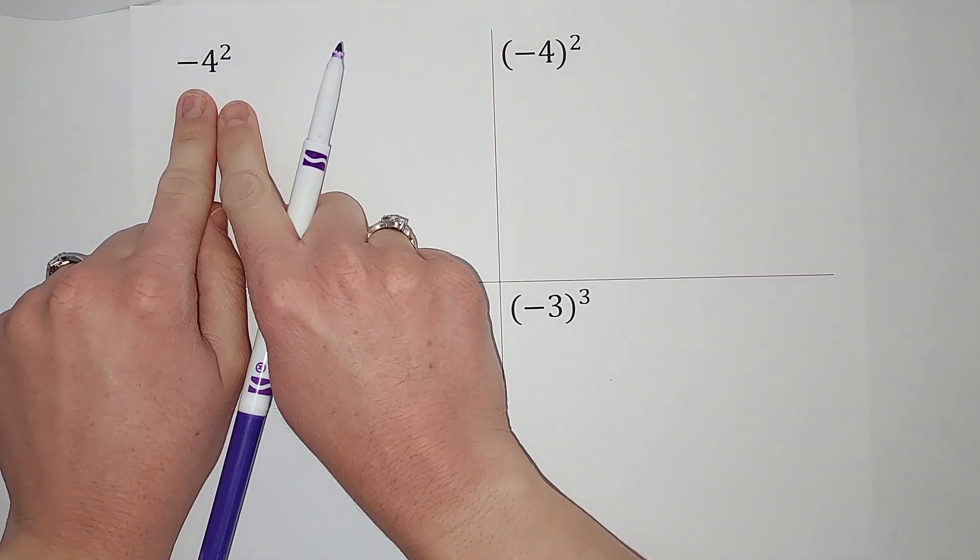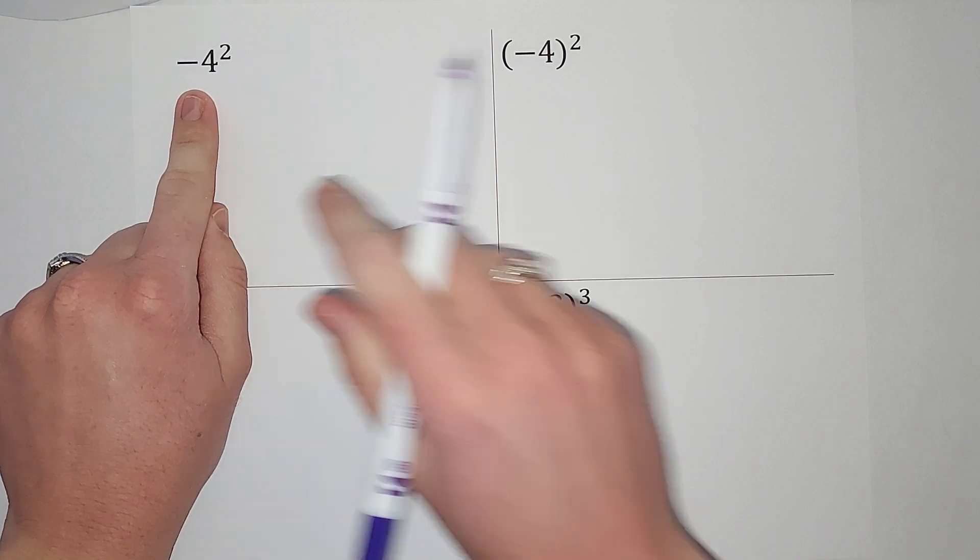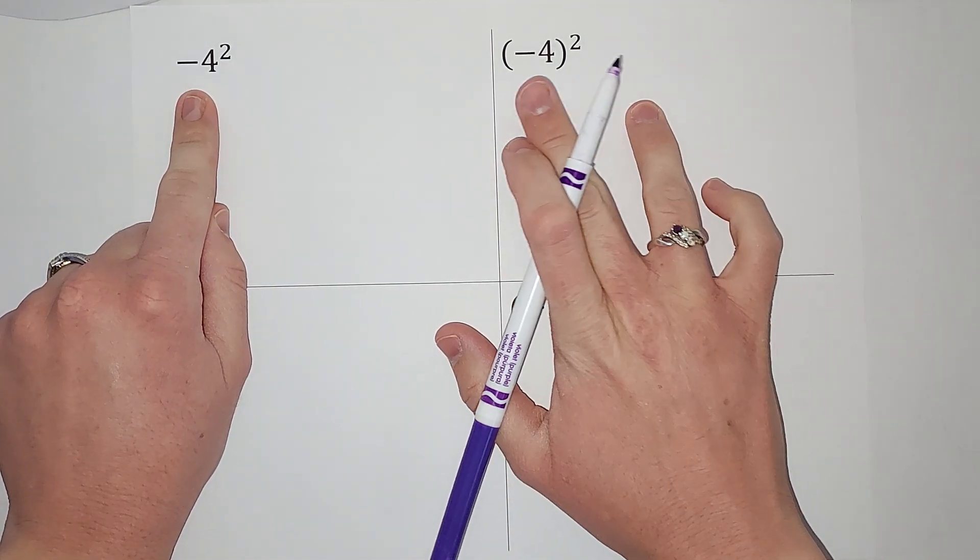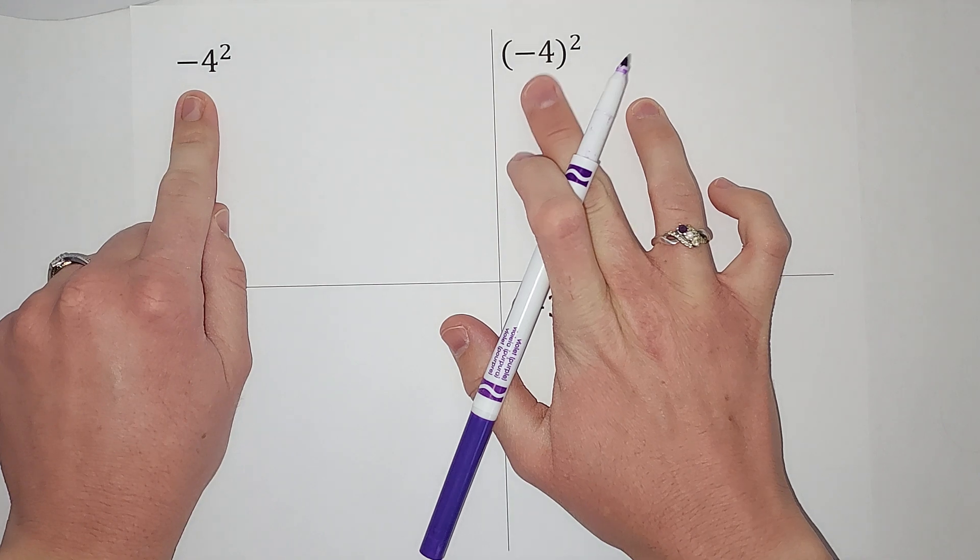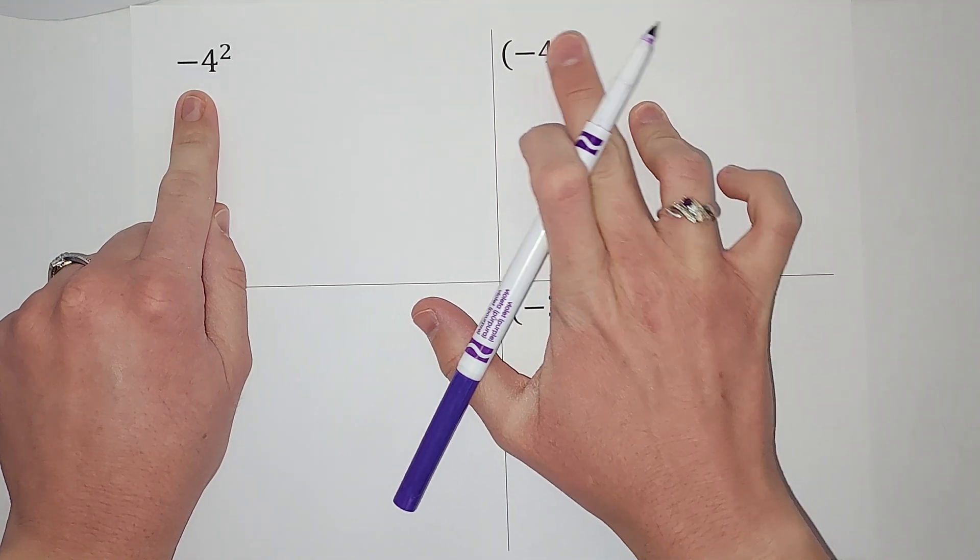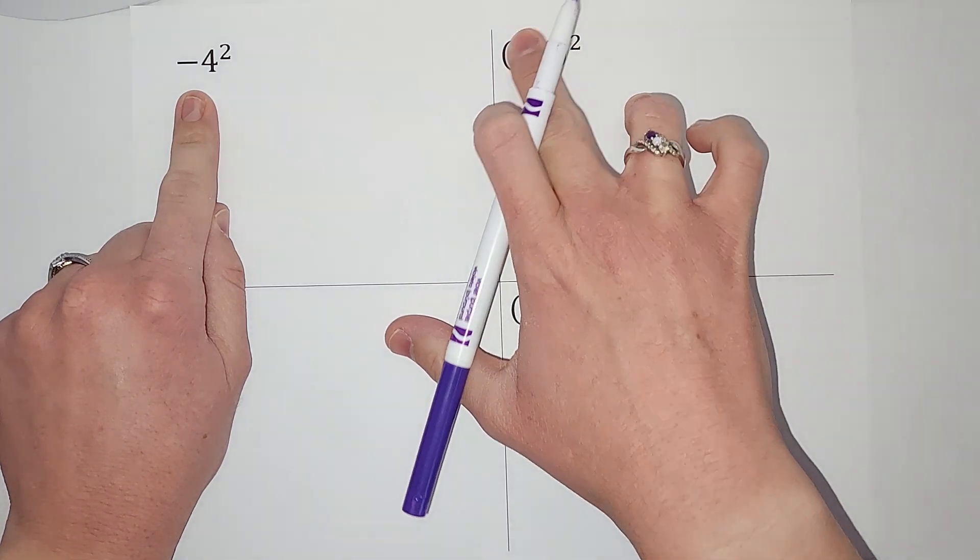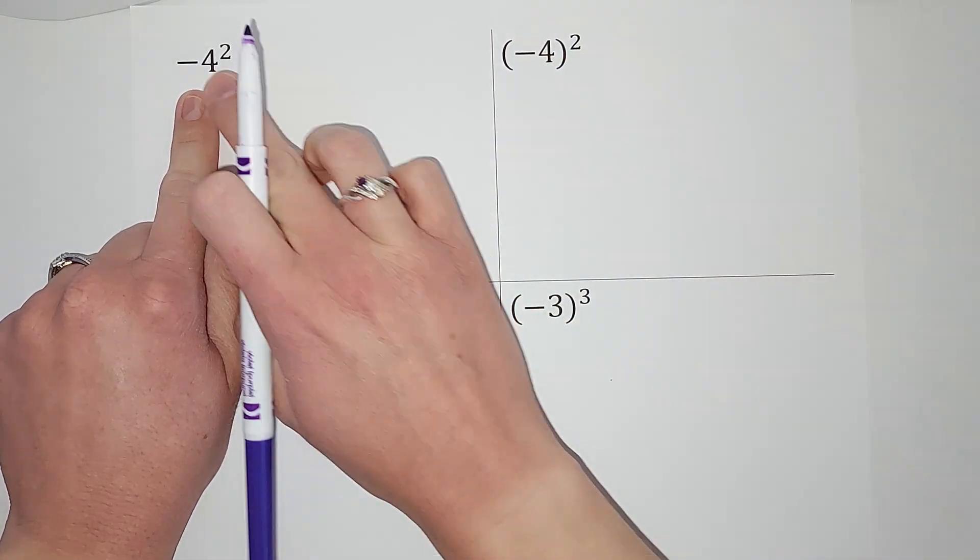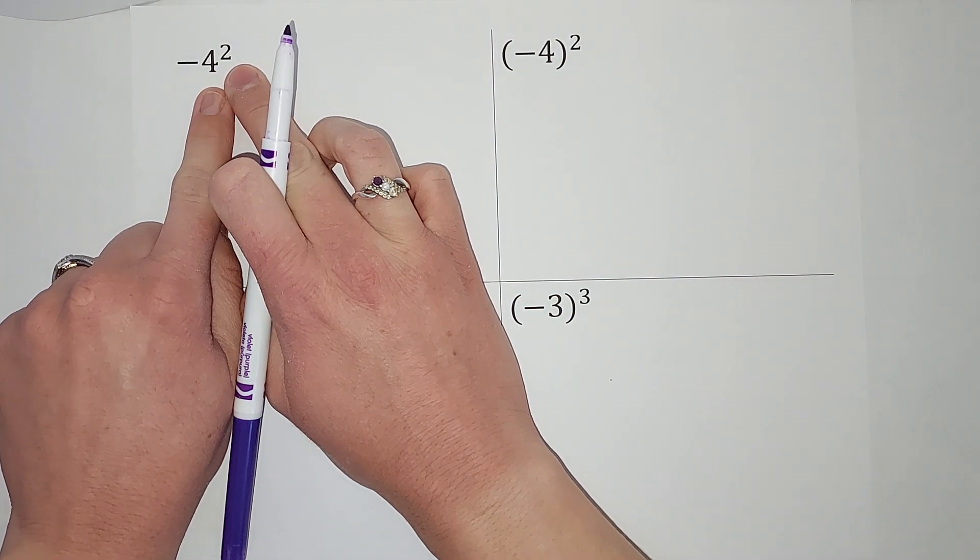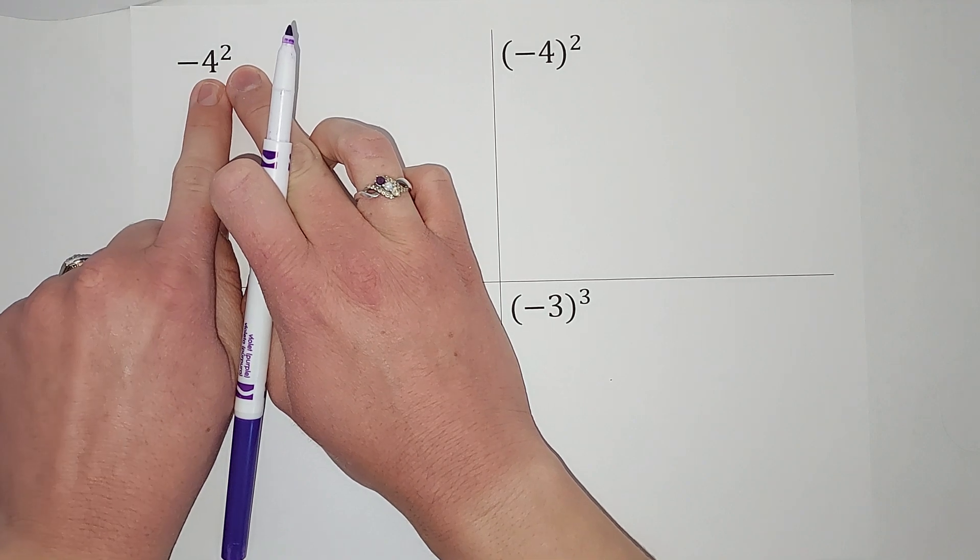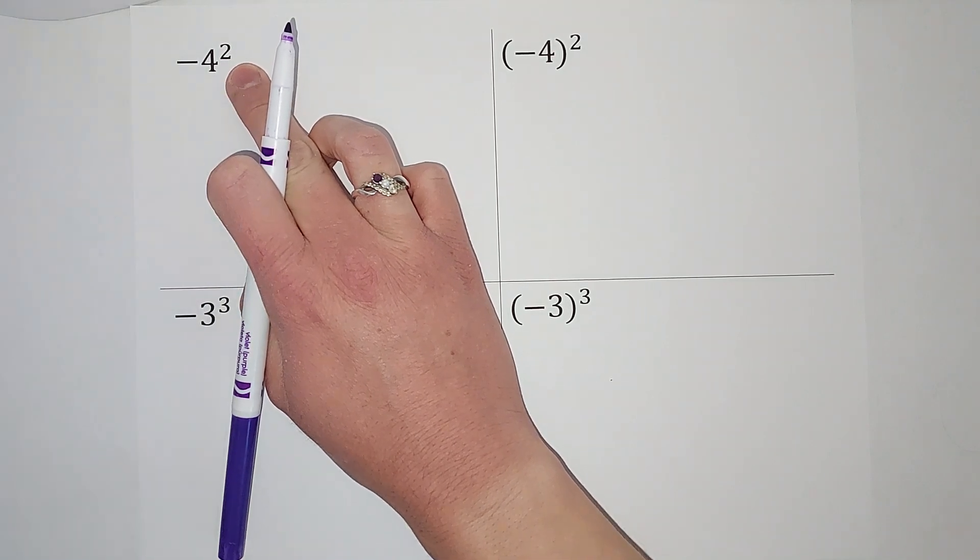Here we have negative four squared. You'll see this is also negative four squared, but there's the parentheses. When it's the parentheses, the squared applies to the entire negative four. When we don't have the parentheses, the squared is only applying to the four. Let me show you what I mean.